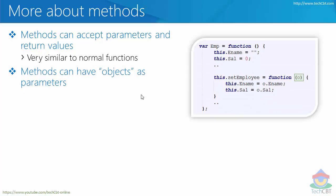Methods can have objects as parameters — that is important. Till now we have seen functions accepting primitive types like strings or integers, but methods can also have objects sent as parameters. Here, O is just a parameter, however I'm trying to access members from that object O and assign them to the members of the current object.